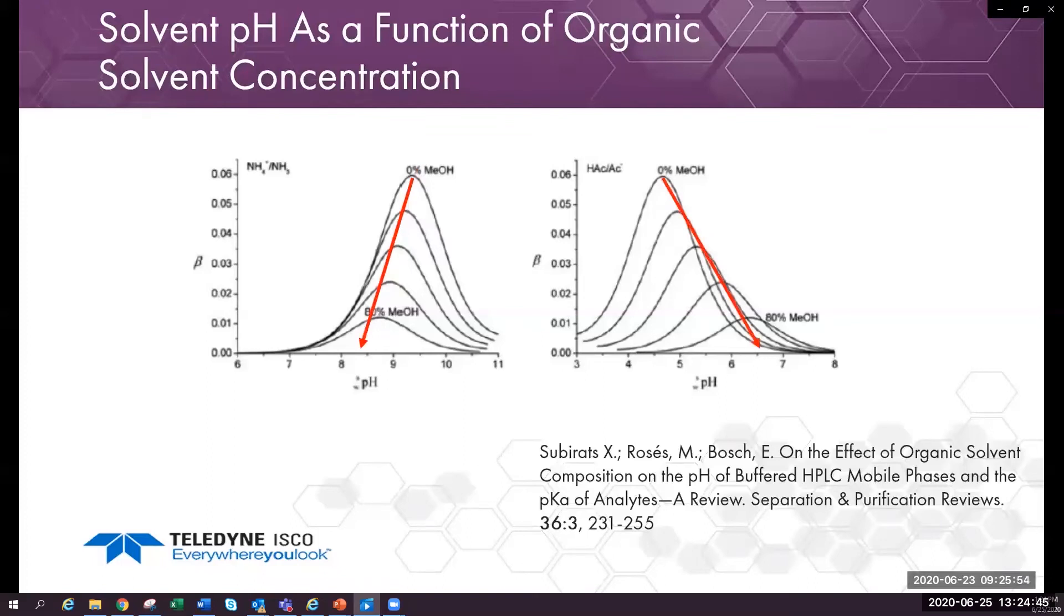Sometimes if one has access to a column which is stable under basic pH conditions, it is better to run a basic buffer for more predictable chromatography. These would normally be polymeric reverse phase. A very few silica columns also can stand basic pH but read the instructions because most silica-based C18 or reverse phase columns dissolve on the polar basic solvent conditions.